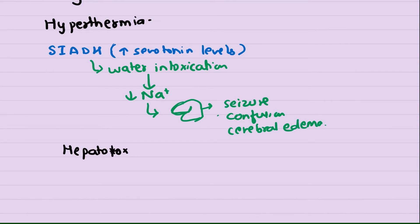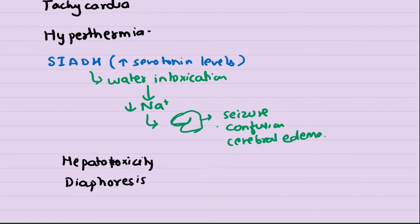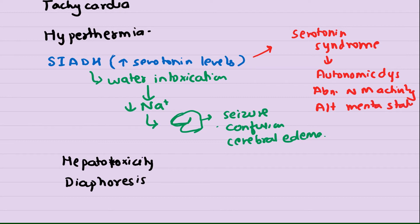Apart from this, there is observation that MDMA is known to cause hepatotoxicity leading to fibrosis of the liver. It is one of the well-recognized toxicities of MDMA. Also, there is increased sweating in patients taking MDMA - that is, diaphoresis. If the serotonin level goes too high, the patient can also develop serotonin syndrome. Serotonin syndrome usually has a triad of autonomic dysfunction, abnormal neuromuscular activity, and altered mental status.